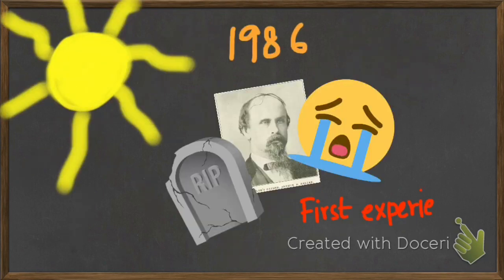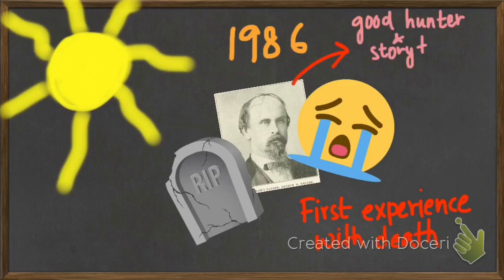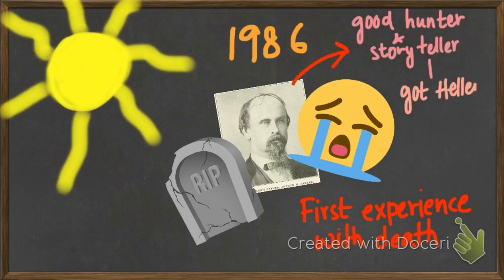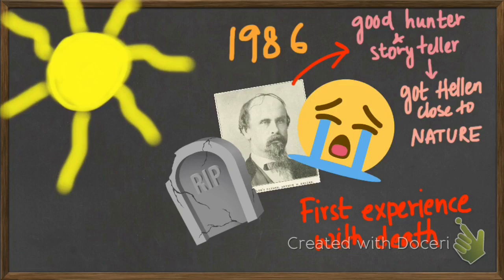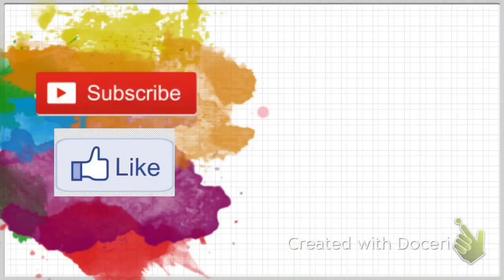In the summer of 1886, Helen Keller had her first experience with death. Her father had passed away. He was a good hunter, story teller, and also got Helen close to nature.